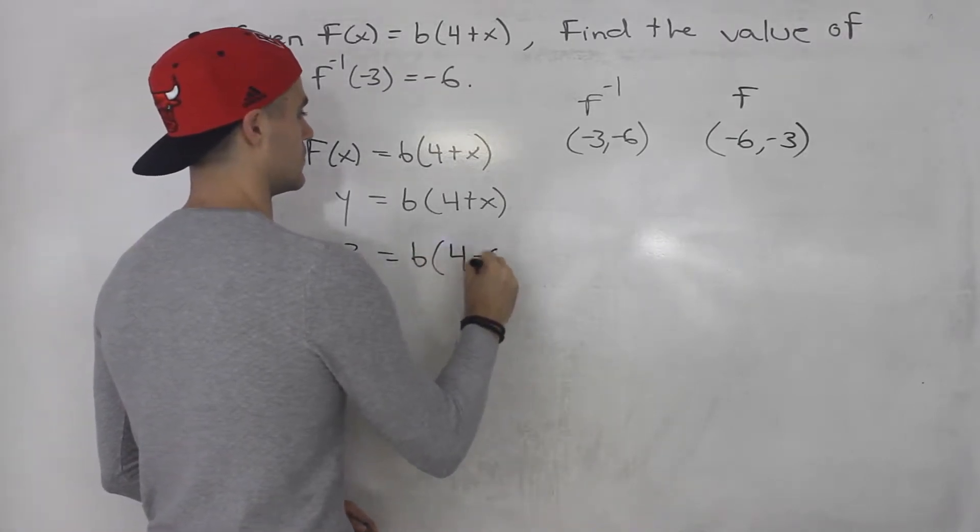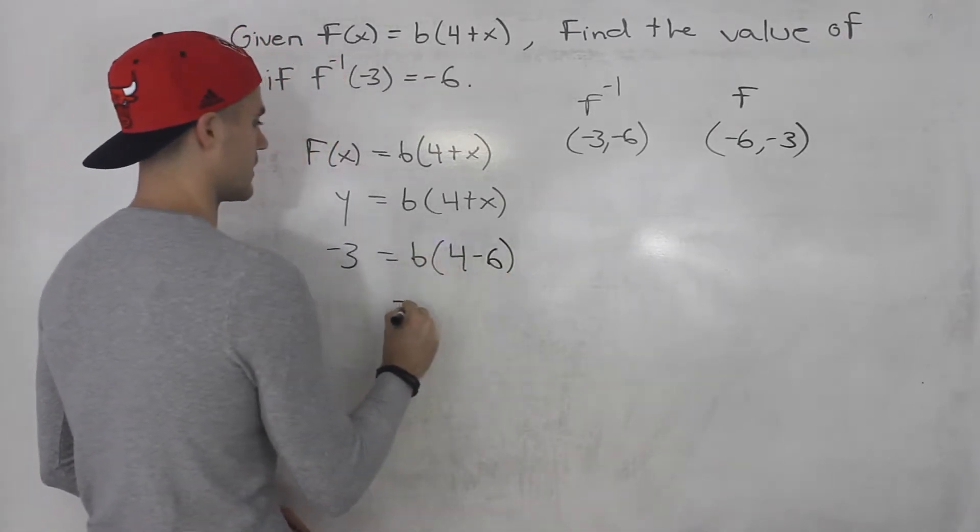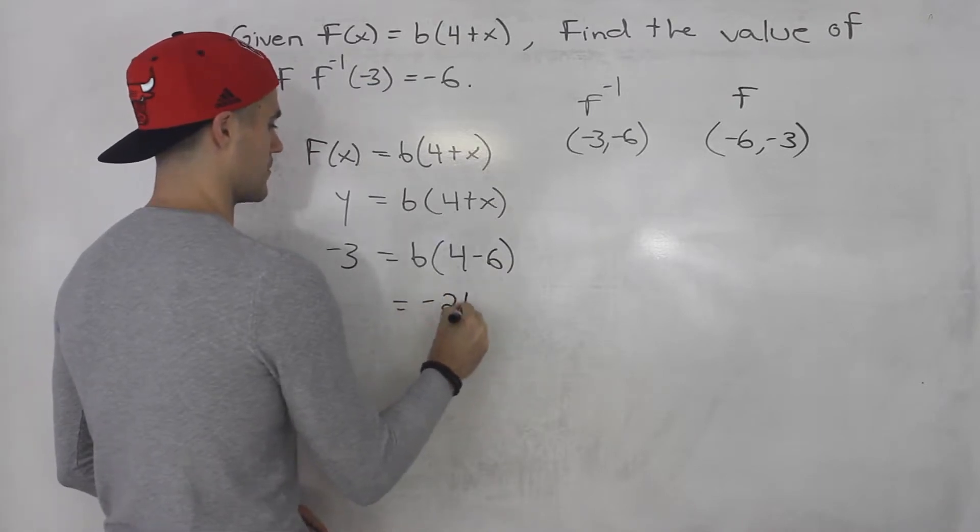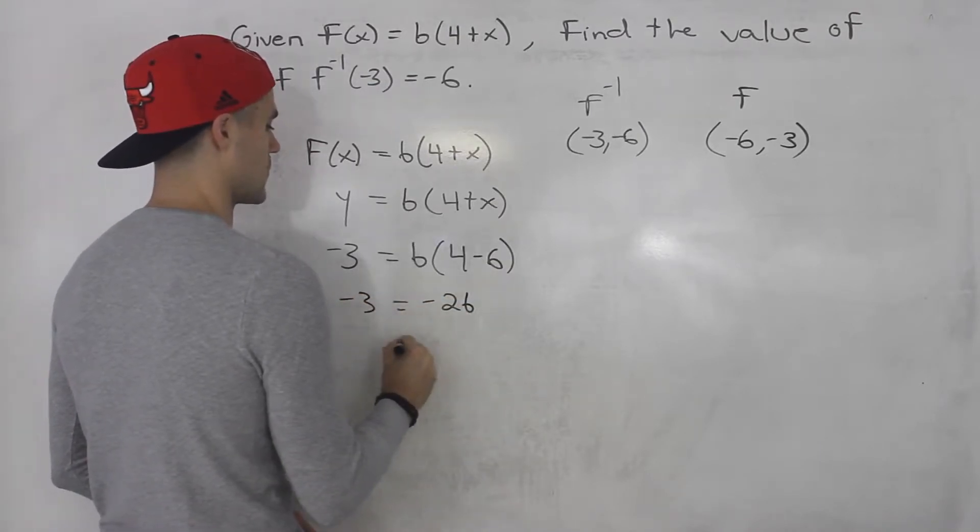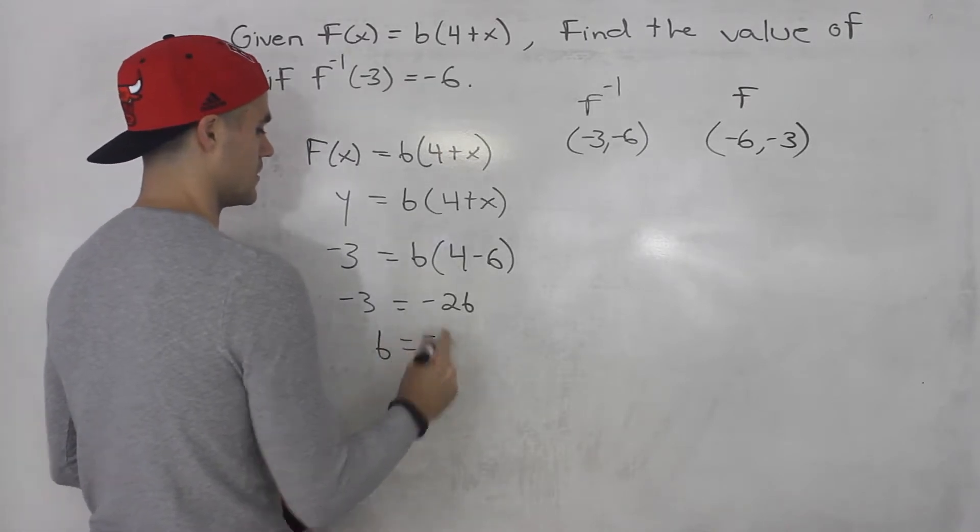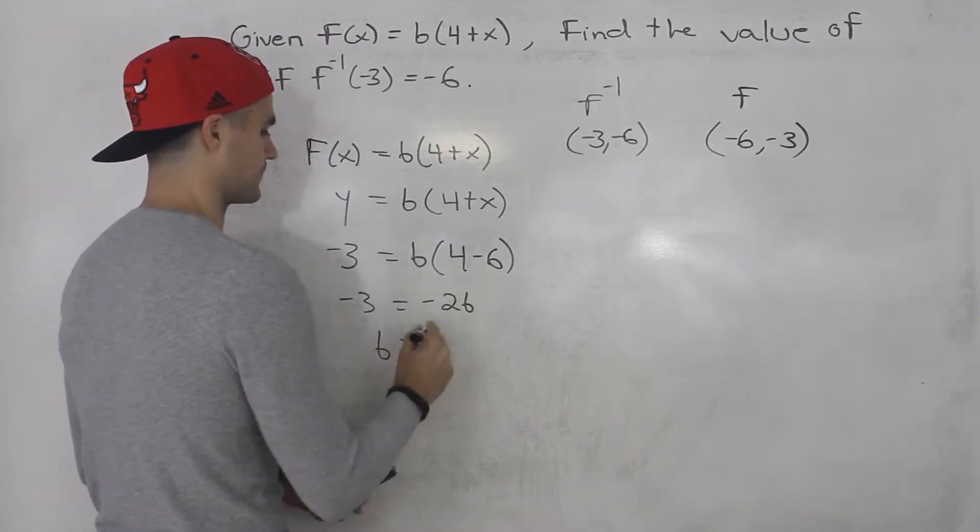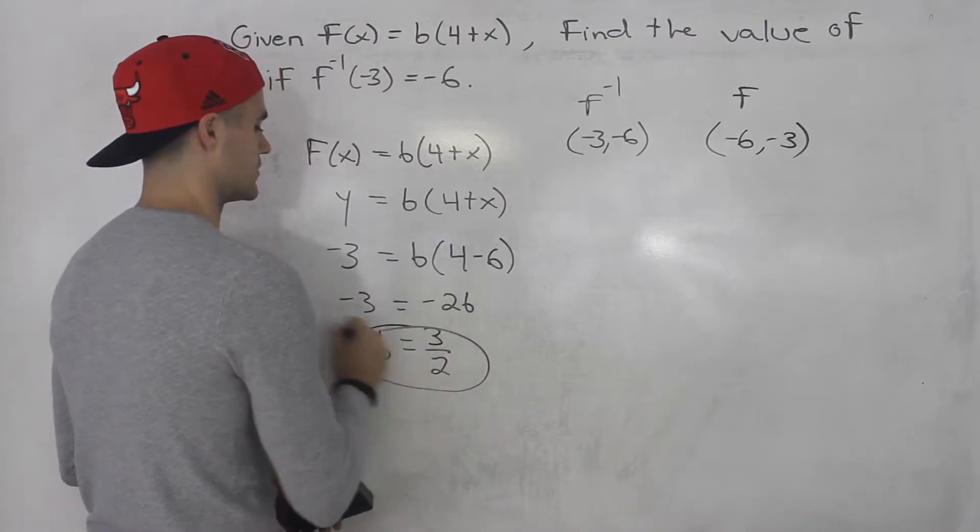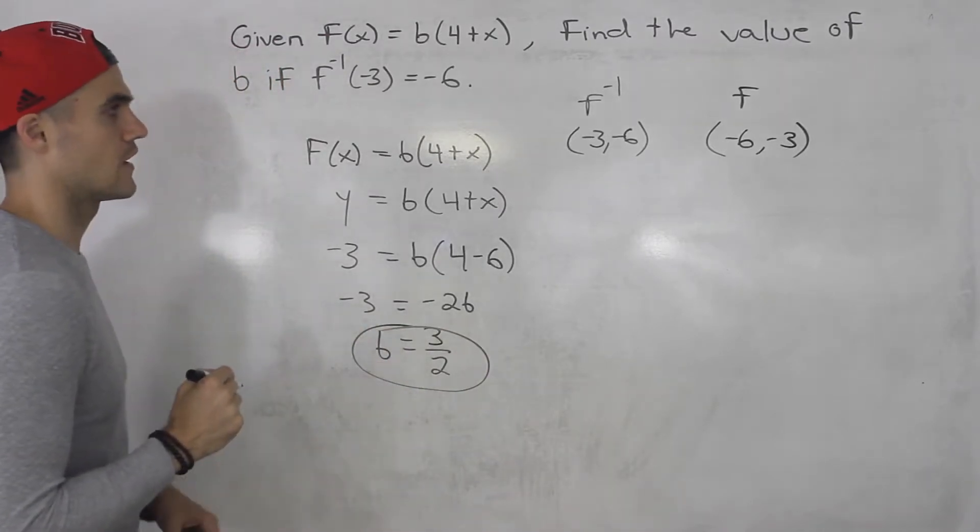So either way you'll get the same answer. But I feel like this way is way easier. Divide both sides by -2. The negatives cancel out. You end up with positive 3/2. So that's the b value.